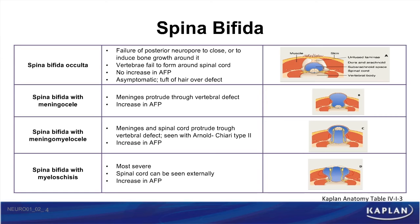The last type, spina bifida with myeloschisis, is also the most severe. In this form, the spinal cord can actually be seen externally and is associated with an increase of maternal serum alpha-fetoprotein levels.